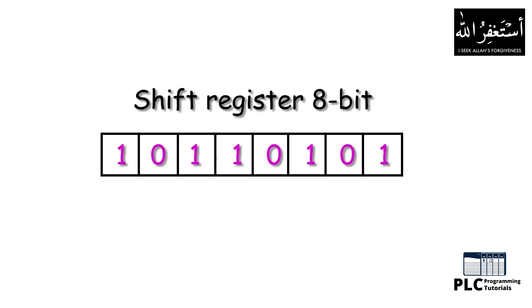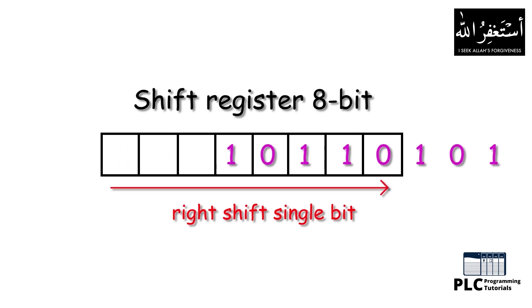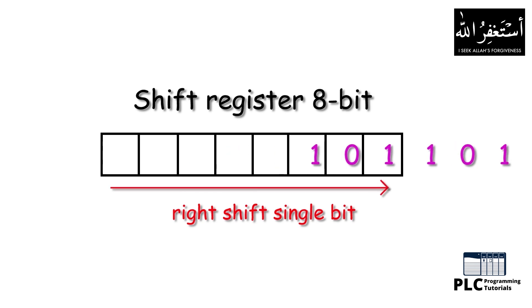Data bits will be in the form of zeros and ones. A shift register can be 8-bit, 16-bit, 32-bit, and so on, but the basic working principle remains the same. As its name suggests, shift registers are shifting data — the data bits inside the shift register will be shifted to the right side or the left side. For example, if we are using a right-side shifting register, the data bits will be shifted to the right by one bit each time the shift instruction is executed.